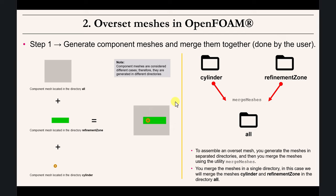Let's look at a simple example — the classical cylinder case. Everything is split into different meshes: we have a background mesh, a refinement region for the wake, and the mesh around the cylinder. You put everything together, merge all meshes into a single working directory, which in OpenFOAM terminology is a single folder. You can generate folder one for the cylinder, folder two for the refinement region, then merge these two meshes and put everything together in a main folder.